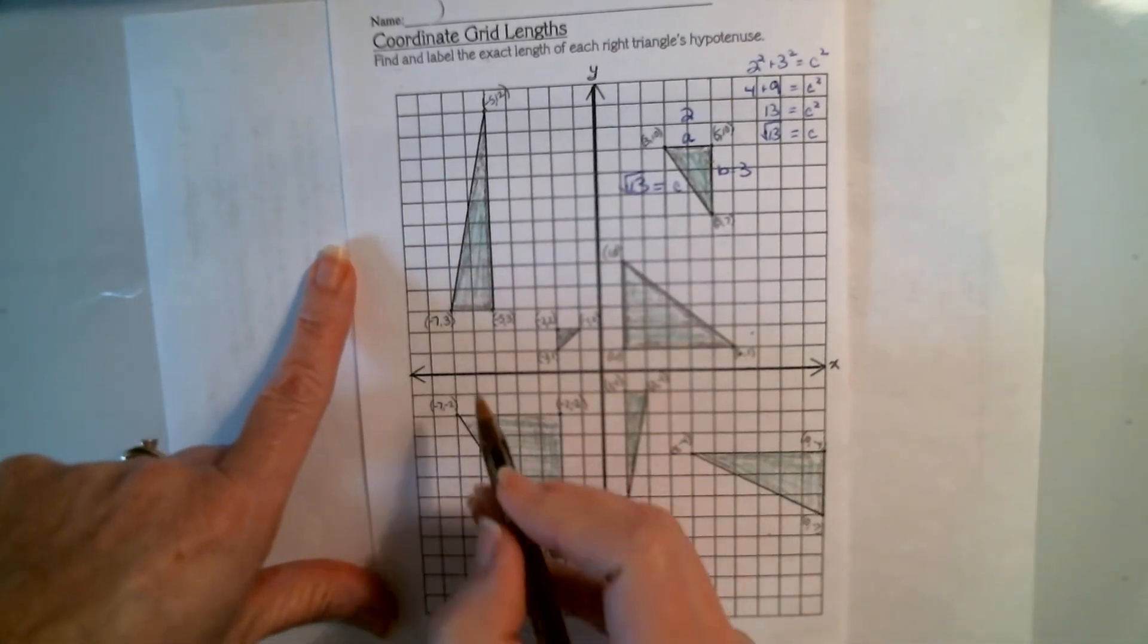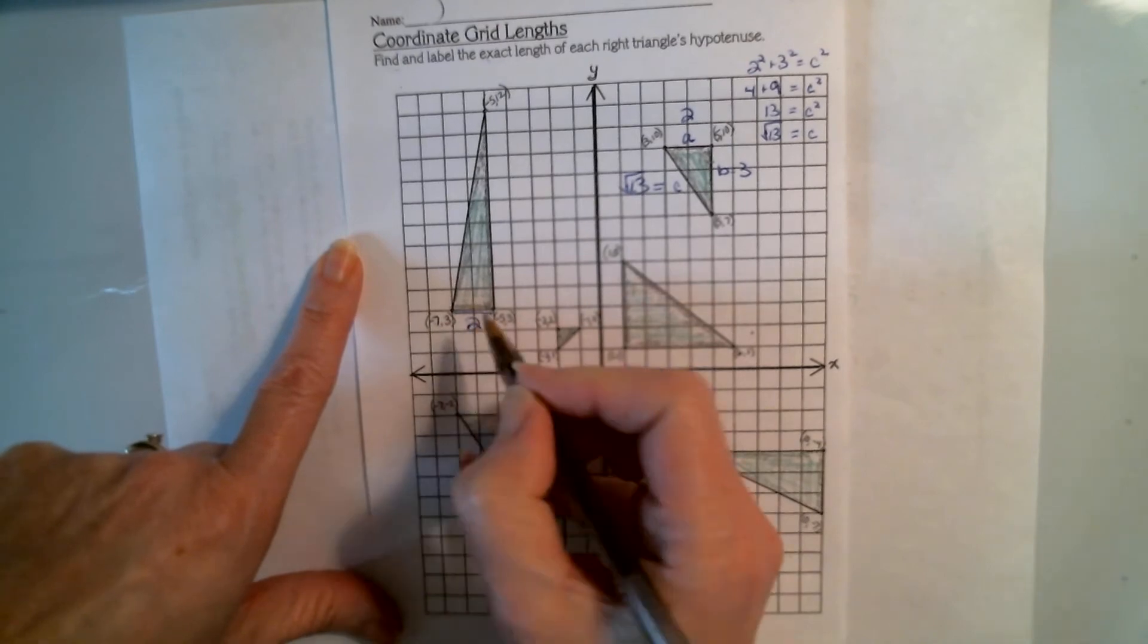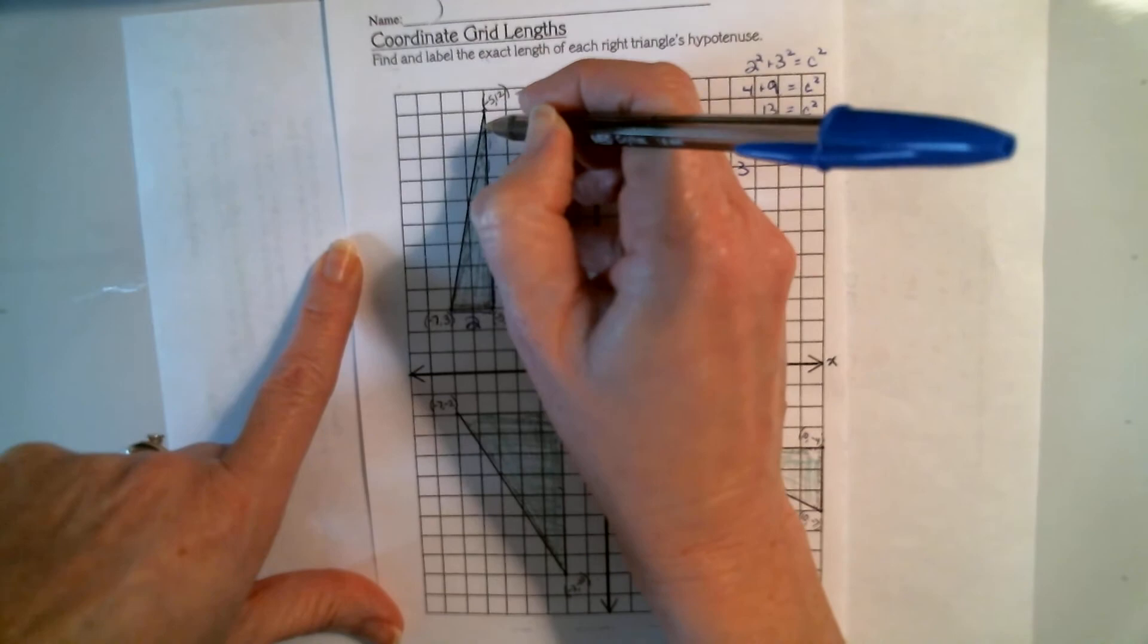How about if we jump over here? This is a length of 2. This is 1, 2, 3, 4, 5, 6, 7, 8, 9.